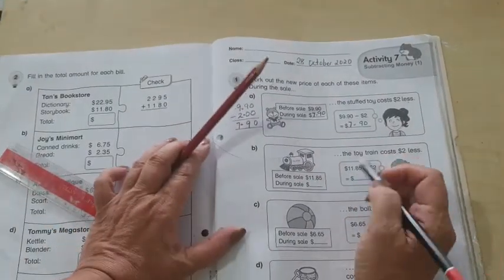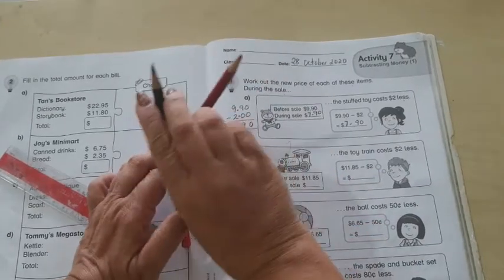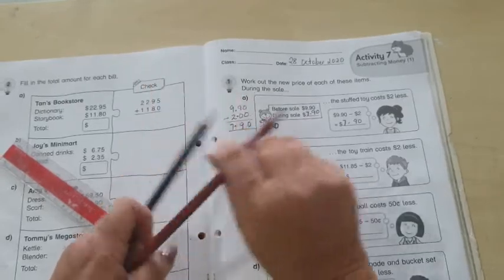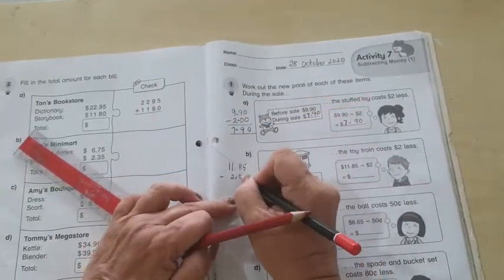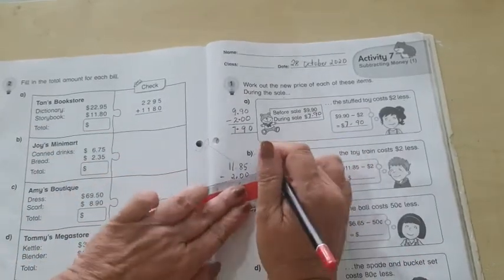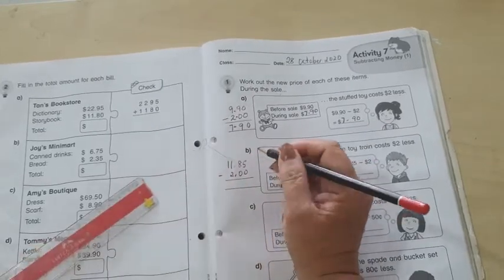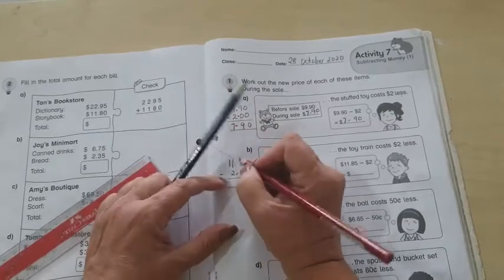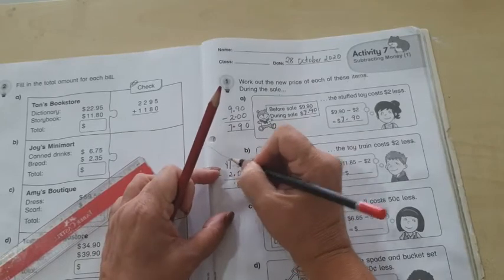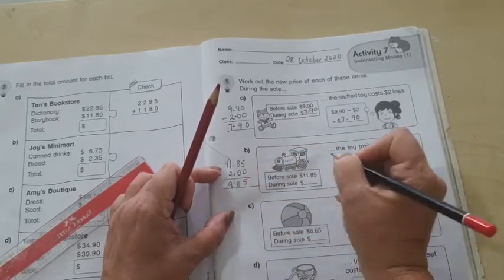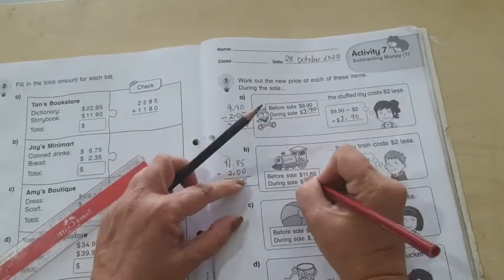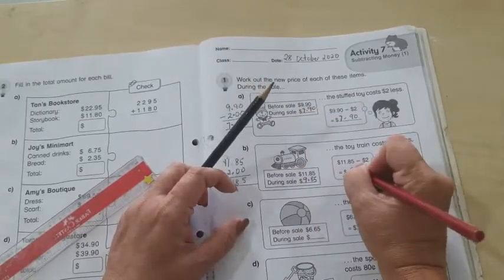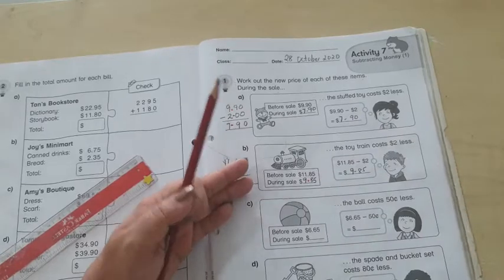So, $11.85 before sale minus $2 during the sale. So, it's $11.85 minus $2.00. So, the answer is $9.85. And, over here also, $9.85.